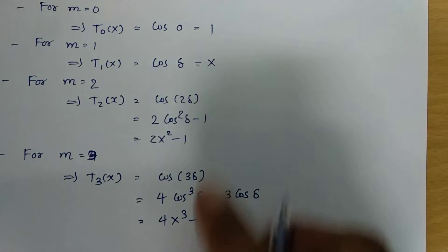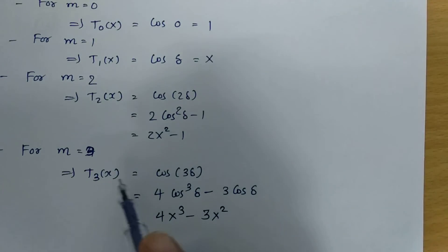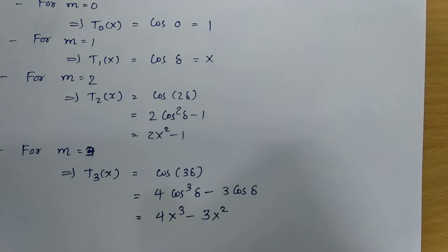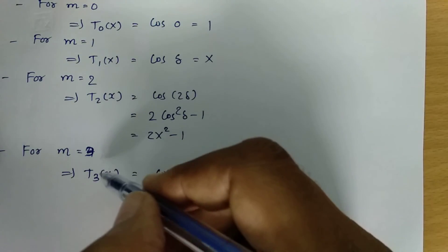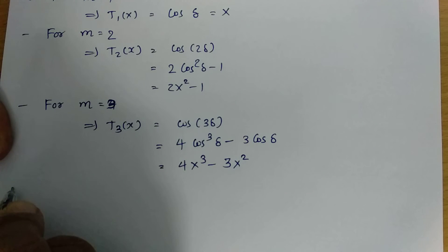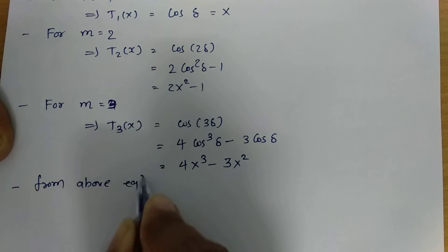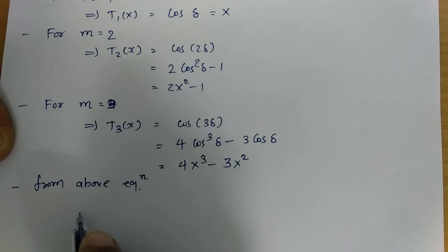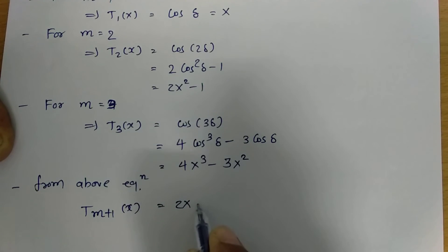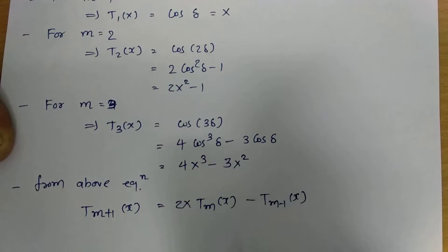Now one can observe that T0 is 1, T1 is x, T2 is 2x squared minus 1, and T3 is 4x cubed minus 3x. From these values, we can find a recurrence relating the current value to previous values. That recurrence is: T(m+1) of x equals 2x times Tm of x minus T(m-1) of x.